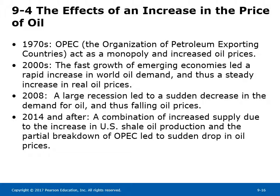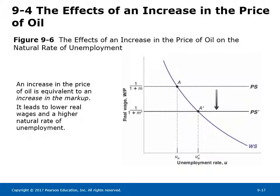Section 9-4: The Effects of an Increase in the Price of Oil. In the 1970s, OPEC, the Organization of Petroleum Exporting Countries, acted as a monopoly and increased oil prices. In the 2000s, fast growth of emerging economies led to a rapid increase in world oil demand and a steady rise in real oil prices. In 2008, a large recession led to a sudden decrease in oil demand and falling prices. After 2014, increased supply from US shale oil production and the partial breakdown of OPEC led to a sudden drop in oil prices. Figure 9-6 shows that an increase in the price of oil is equivalent to an increase in the markup, causing a downward shift of the price-setting curve: real wages fall and the natural rate of unemployment rises.